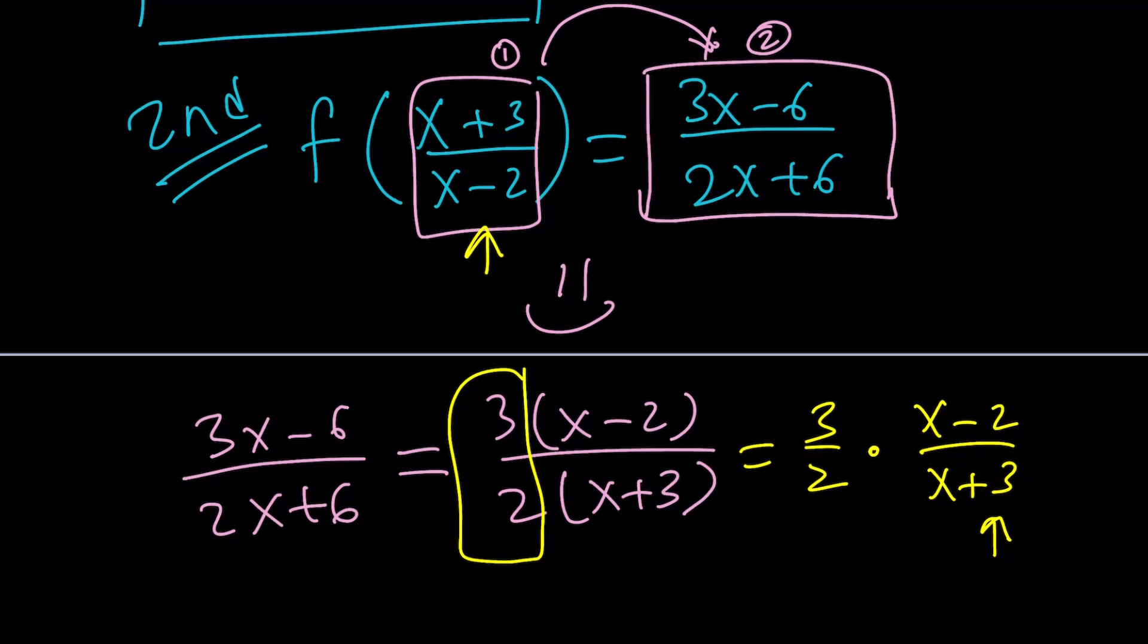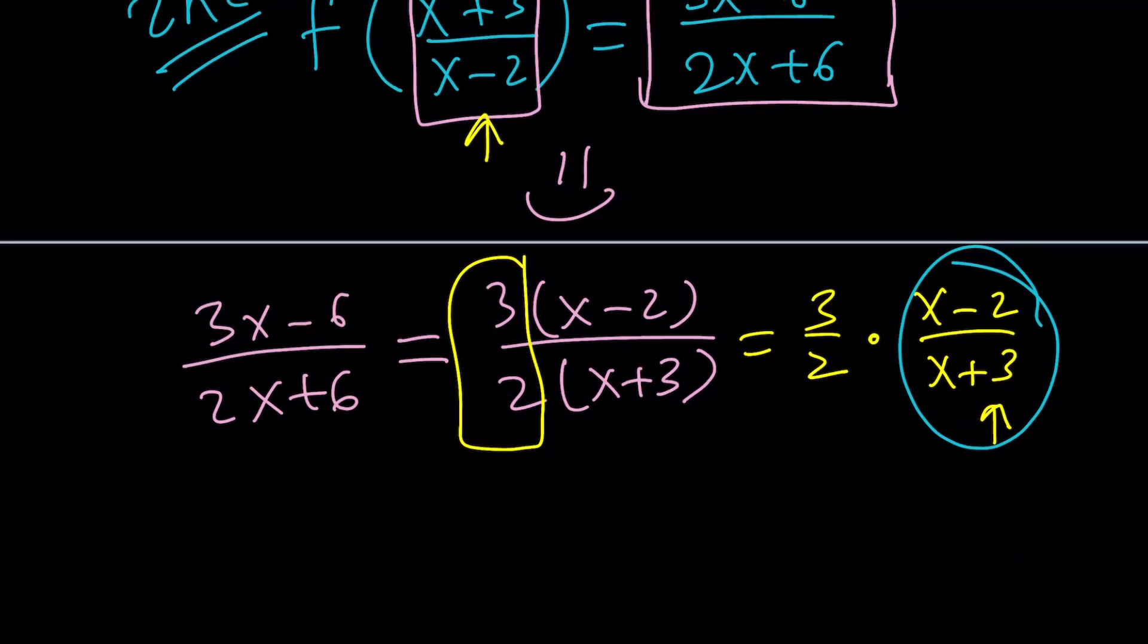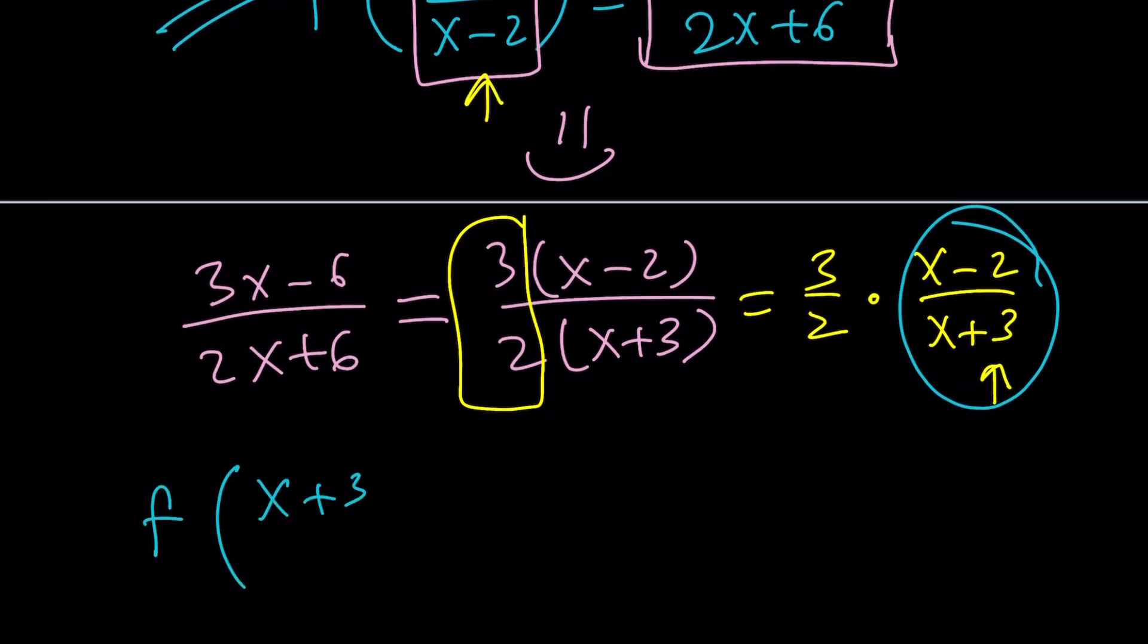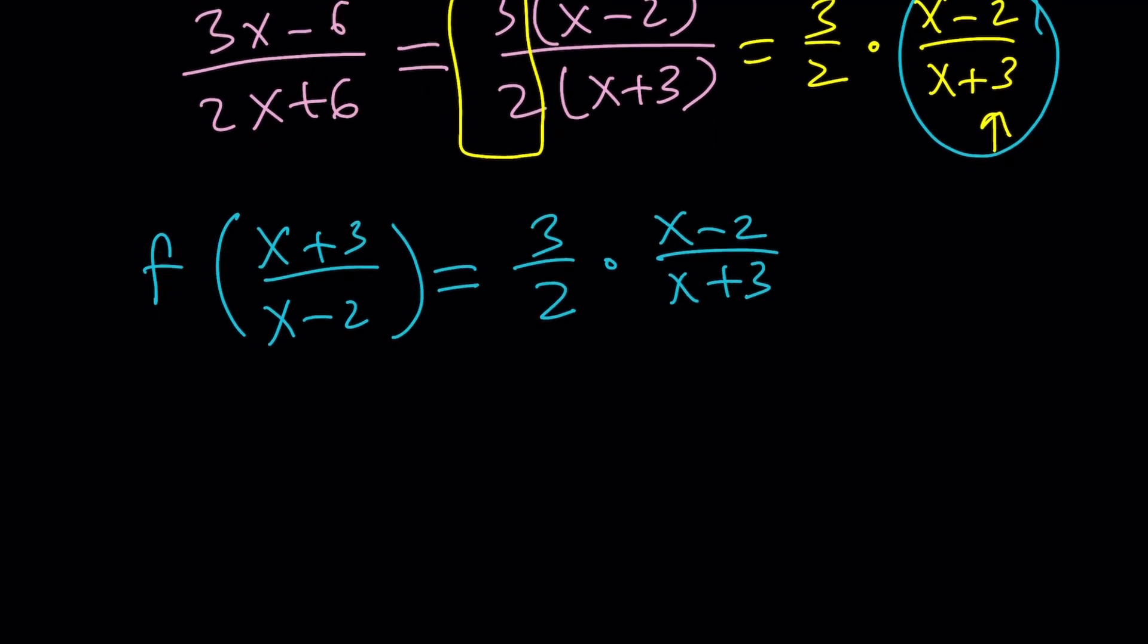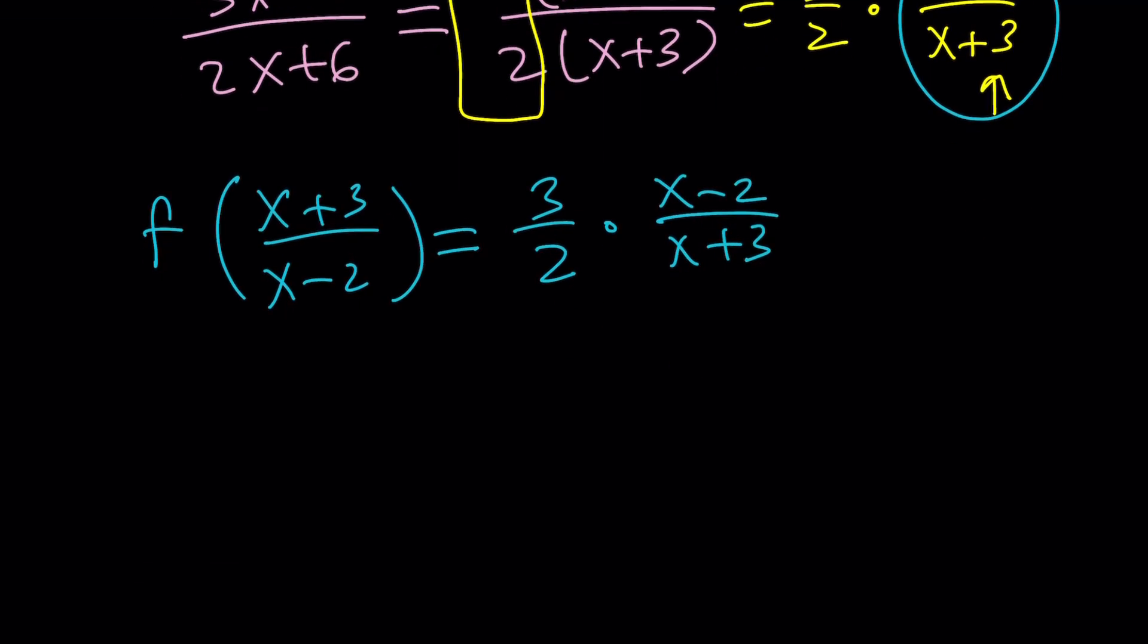They are reciprocals. Awesome. Now, here's what we're going to do. We're going to write this as f of x plus 3 over x minus 2 equals 3 over 2 times x minus 2 over x plus 3. I just want to write it once first like this. And then I'll talk about the reciprocity. The state of being reciprocals. So, these two expressions are reciprocals. Because if you flip one, you get the other. Do you get it? So, what does that mean? If you replace this with something, this is going to be the reciprocal.